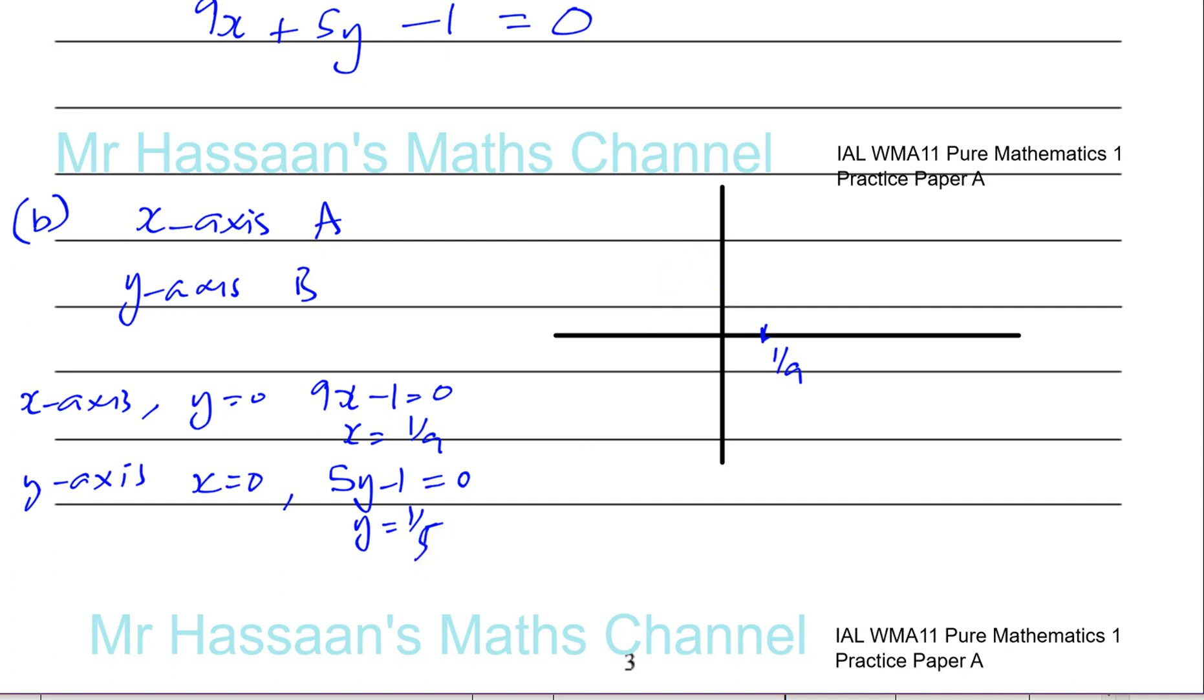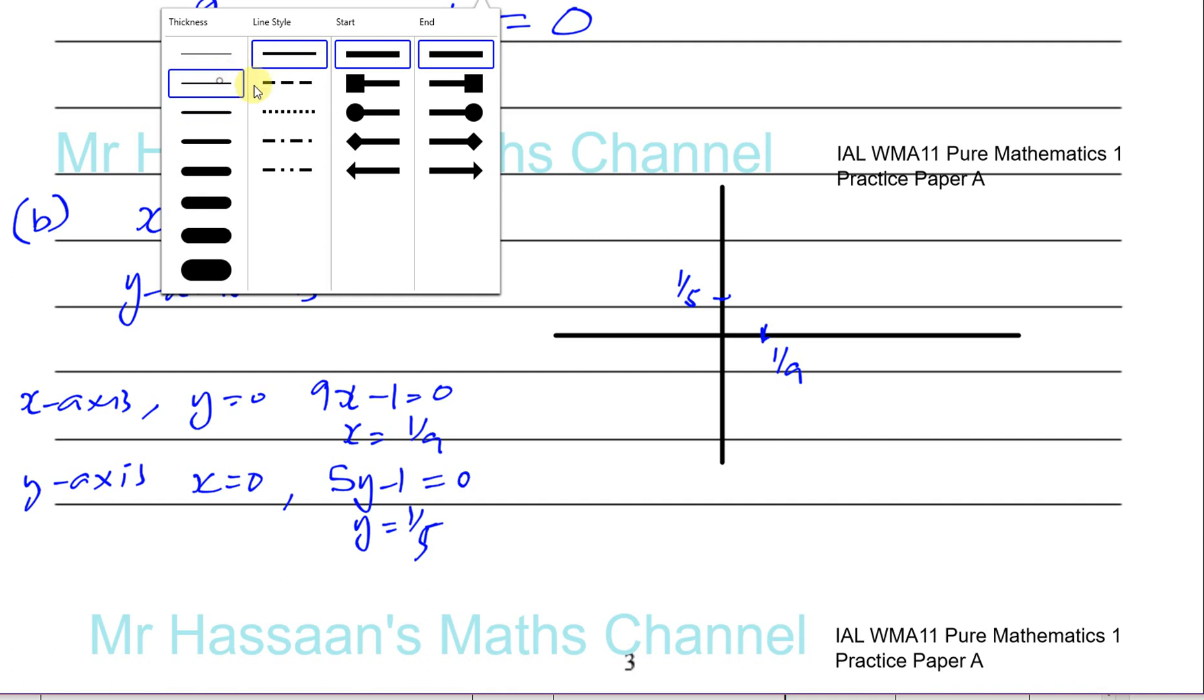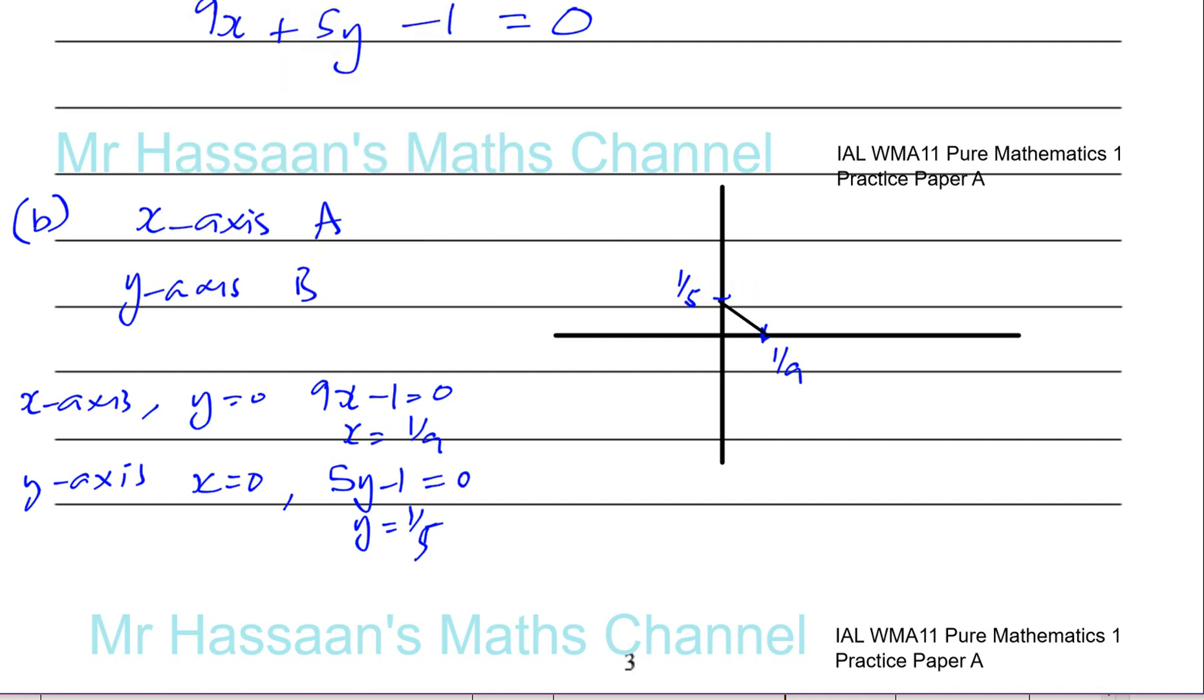It's a really small triangle here. You have A, O, and B. This is the triangle AOB. OB is 1/5 and OA is 1/9.